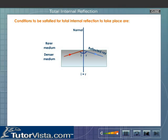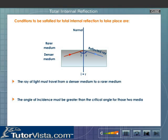Conditions to be satisfied for total internal reflection to take place are: the ray of light must travel from a denser medium to a rarer medium, and the angle of incidence must be greater than the critical angle for those two media.